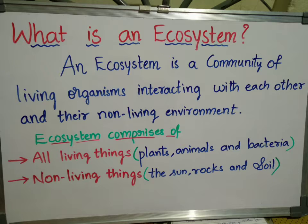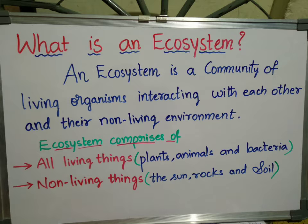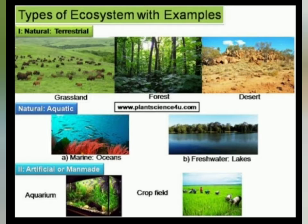Technically, an ecosystem is a community of living organisms interacting with each other and their non-living environment. Let us see examples of the types of ecosystem. Ecosystem is divided into two types: natural and artificial.